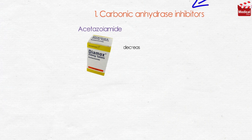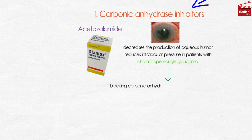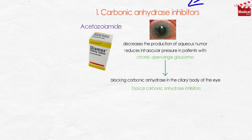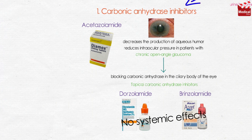Acetazolamide decreases the production of aqueous humor and reduces intraocular pressure in patients with chronic open-angle glaucoma, probably by blocking carbonic anhydrase in the ciliary body of the eye. Topical carbonic anhydrase inhibitors, such as dorzolamide and brinzolamide, have the advantage of not causing systemic effects.